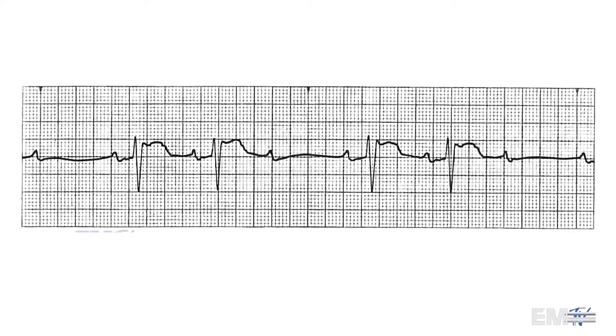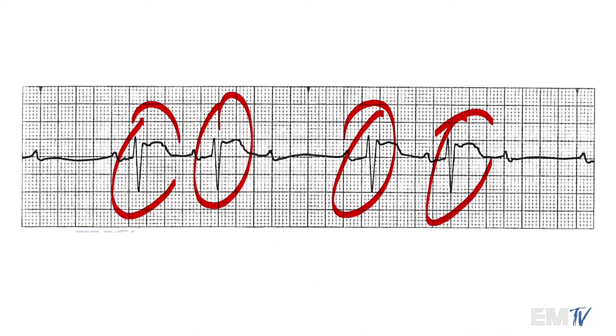As we're looking at six-second strips here, there are one, two, three, four QRS complexes, so this heart rate is approximately 40 BPM.